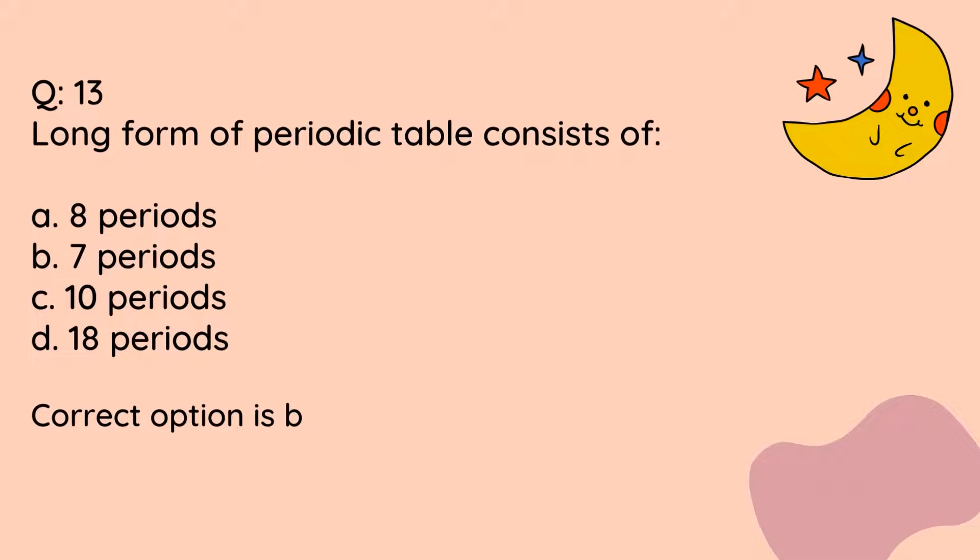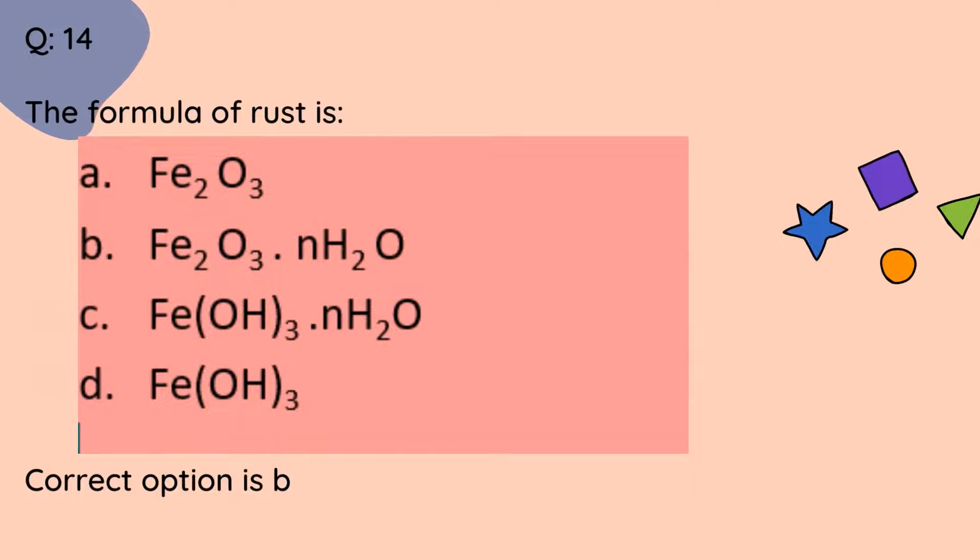Question number 13. Long form of periodic table consists of: A, 8 periods, B, 7 periods, C, 10 periods, D, 18 periods. Correct option is B. Question number 14. The formula of rust is: A, Fe2O3, B, Fe2O3·nH2O, C, FeO3·nH2O, D, Fe(OH)3. Correct option is B.